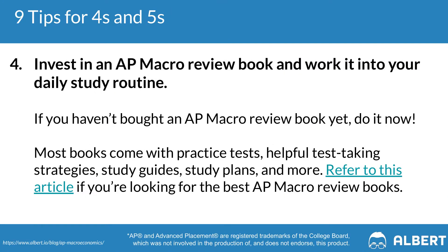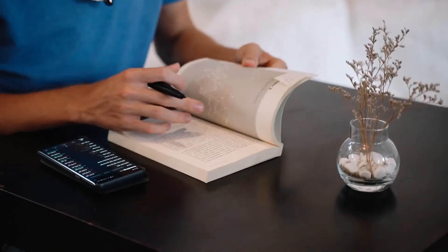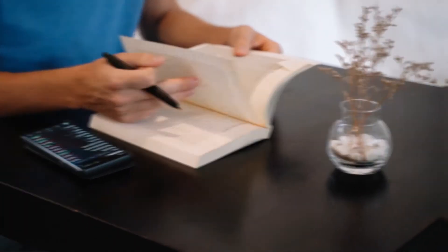Tip number four is to invest in an AP macro review resource early and use it often throughout the school year — whether that's a Princeton Review or Barron's review book, or an online resource like Albert. We recommend blocking out 30 minutes every other day to review topics your teacher has just taught, then testing yourself a few days later with an online resource for instant feedback. These resources also offer condensed cliff-notes versions of concepts, which can help you master the material.